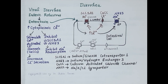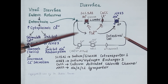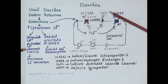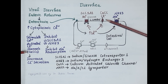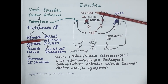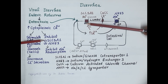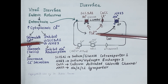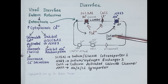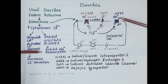Now let's discuss the pathogenesis of viral diarrhea. Enteric rotavirus produces a toxin called enterotoxin. This enterotoxin acts on the intestinal cell and causes an increase in cytoplasmic calcium. This increase in cytoplasmic calcium stimulates calcium-activated chloride channels, thereby increasing secretion of chloride ions in the intestinal lumen. On the other hand, increased calcium concentration inhibits sodium-glucose co-transporter 1 (SGLT1) and sodium-hydrogen exchanger 3 (NHE3), thereby inhibiting absorption of sodium ions in intestinal cells.